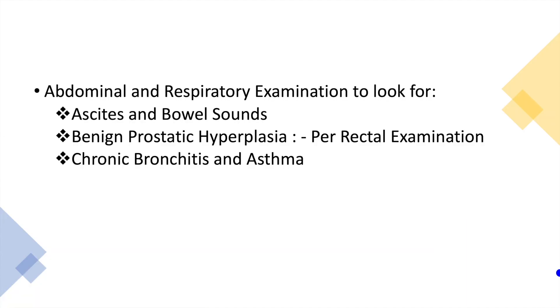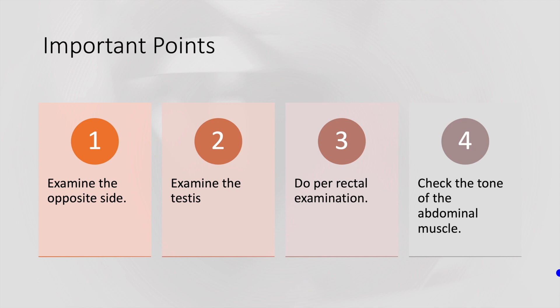Examination: perform an abdominal examination to look for ascites, bowel sounds, and benign prostatic hyperplasia. Perform a respiratory examination to look for chronic bronchitis and asthma. Important examination points: always examine the opposite side, always examine the testis, always do a per rectal examination, and always check the tone of the abdominal muscles. This can be done by asking the patient to perform a straight leg raise of both legs simultaneously while palpating the abdominal muscles.